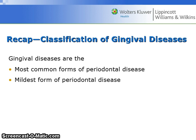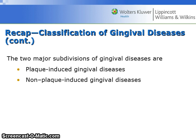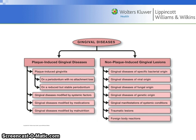Gingival diseases are the most common and mildest form of periodontal disease. The two major subdivisions are plaque-induced and non-plaque-induced. Refer back to Figure 14.1 on page 236 for more information.